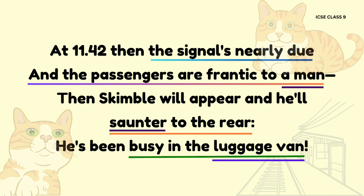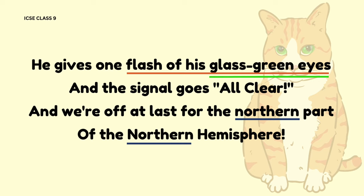Line 11: 'Then Skimble will appear and he'll saunter to the rear.' The phrase 'saunter to the rear' is a metaphor referring to Skimble Shanks. The word 'saunter' is an example of onomatopoeia since it creates auditory imagery. Line 12: 'He's been busy in the luggage van.' The phrase 'busy in the luggage van' is an example of a metaphor referring to Skimble Shanks, and 'luggage van' is an example of imagery since it is visually descriptive.